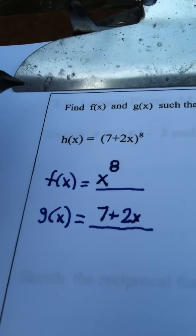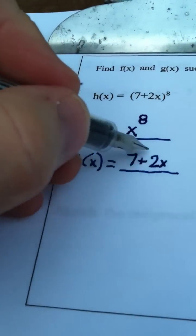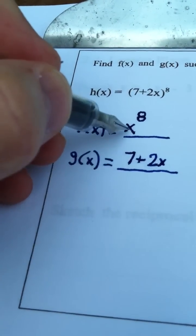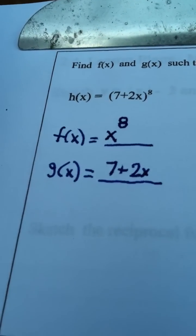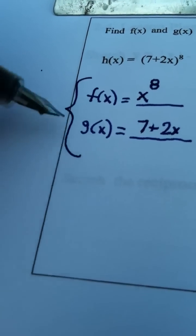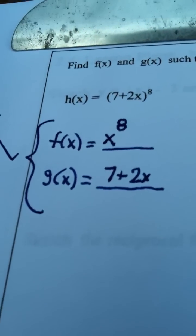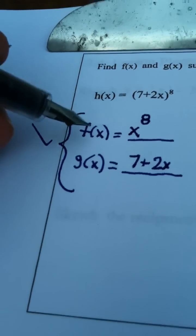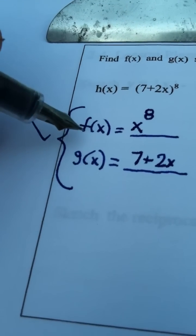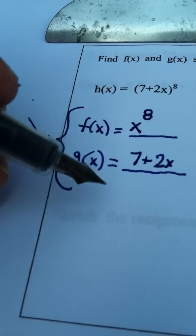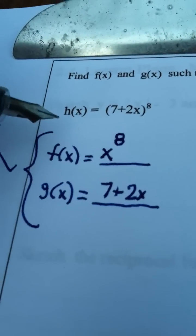And of course we could always test that we did this correctly. If I took this and I put it in the place of this x, I would come up with this. So those are my two answers to this function. If I created this f(x) and this g(x) and I composed them in the order, f composed with g(x), I would end up with h(x).